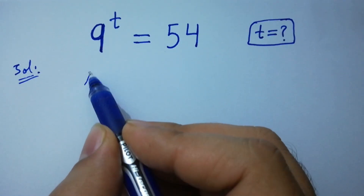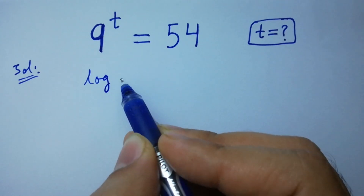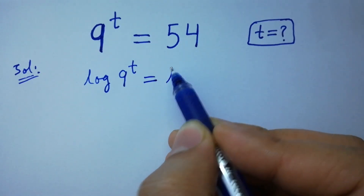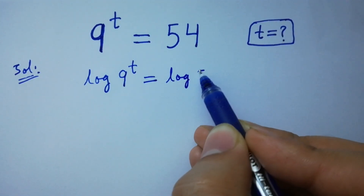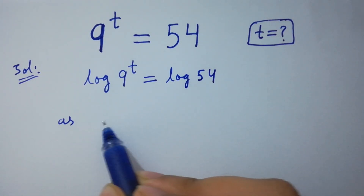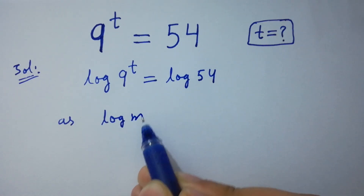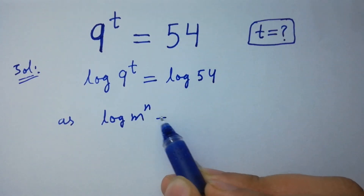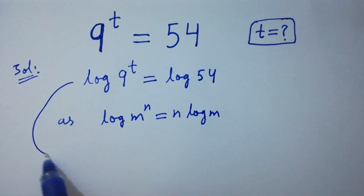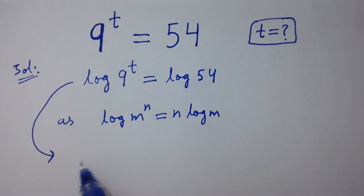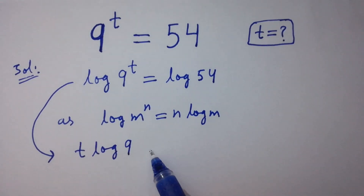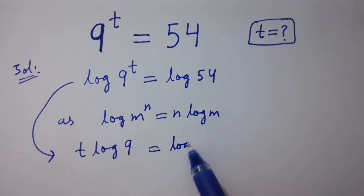Take log on both sides. As we know, log m to the power n equals n log m, we get t log 9 equals log 54.